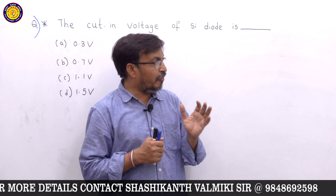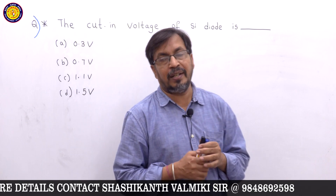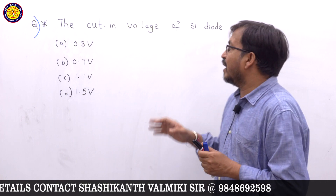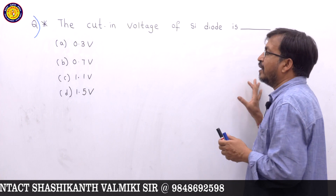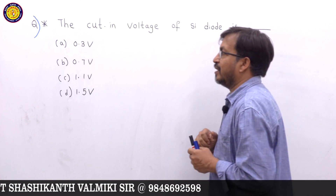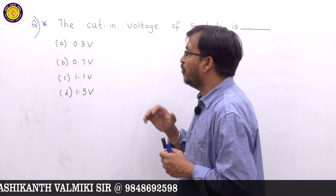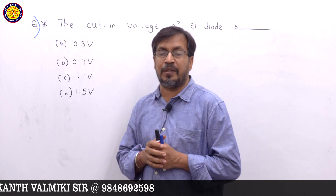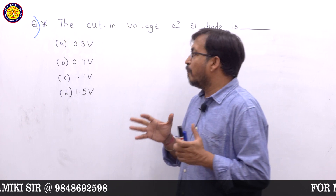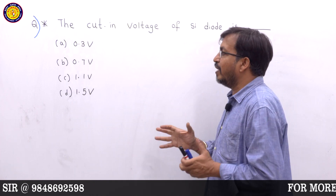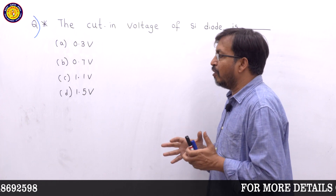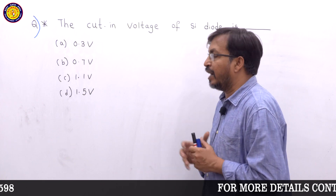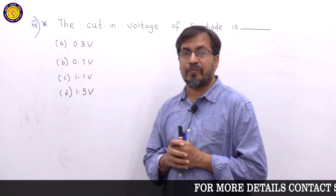The first question: the cutting voltage of a silicon diode is — here we have four options: 0.3 volts, 0.7 volts, 1.1 volts, or 1.5 volts.